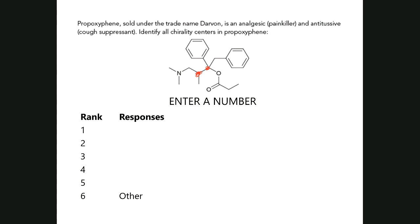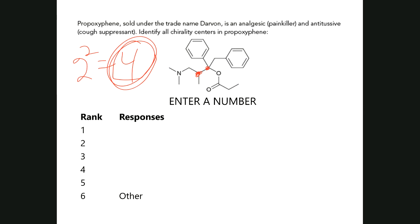So therefore, how many different possibilities? If you look at the structure, notice there are no wedges or dashes indicated — so there's no perspective shown. But even with everything flat, there's no possibility of symmetry in the way these groups are attached. Because there's no possibility of symmetry, there's not going to be a meso structure in this compound. So 2² gives four different possibilities of this compound — two pairs of enantiomers. Enantiomers have different physiological responses.